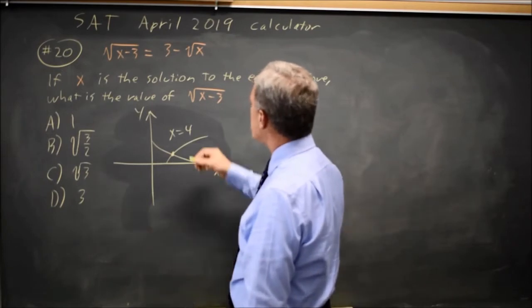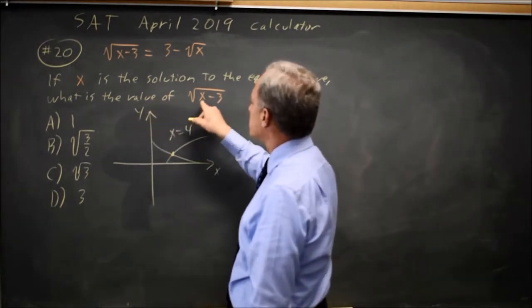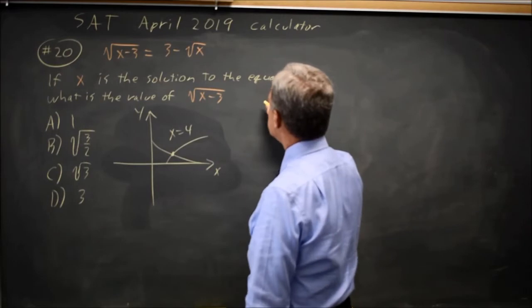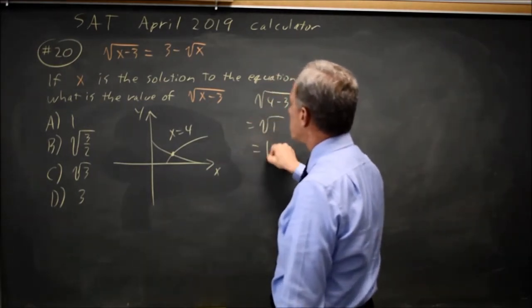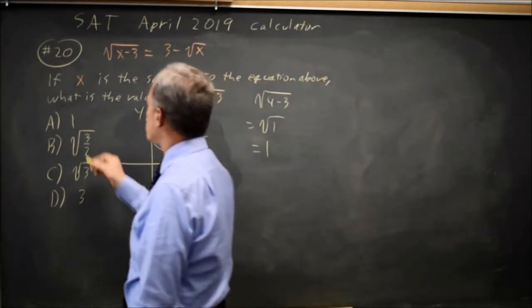So if x is 4, they're not asking for x, they're asking for root x minus 3, which is root 4 minus 3, which is square root of 1, which is 1. So the answer would be 1.